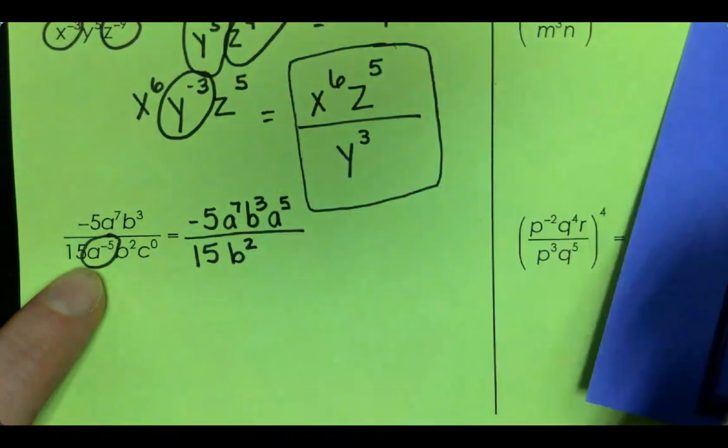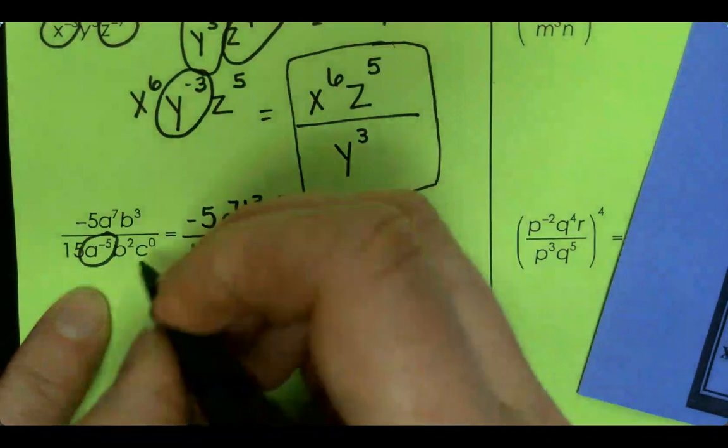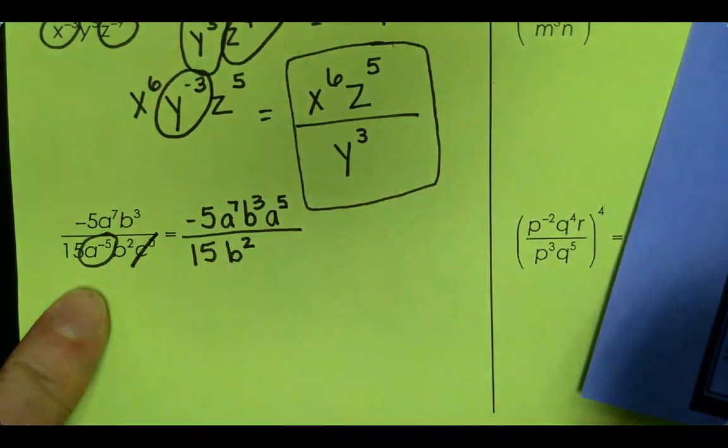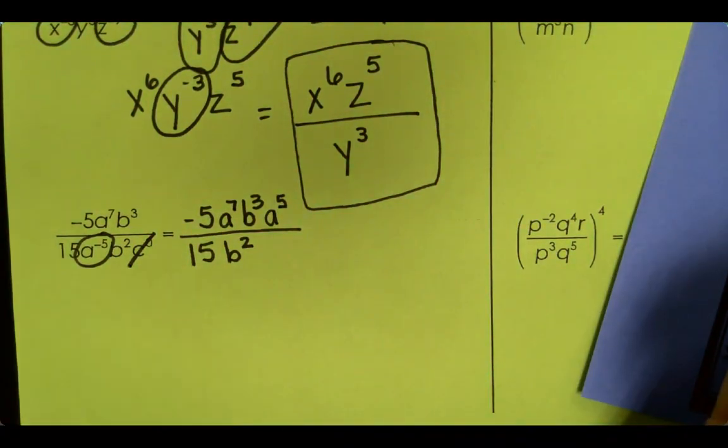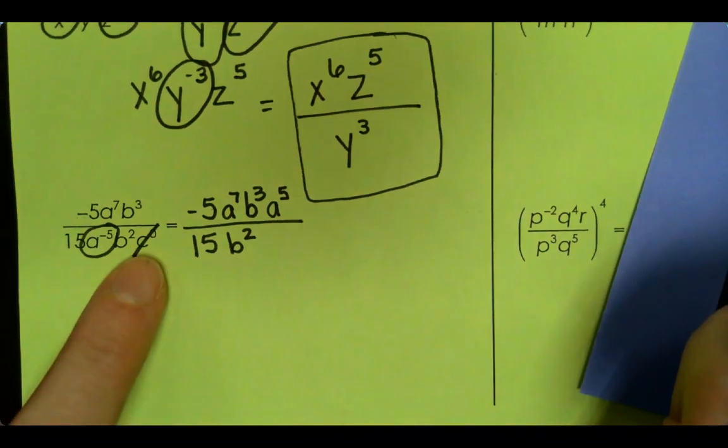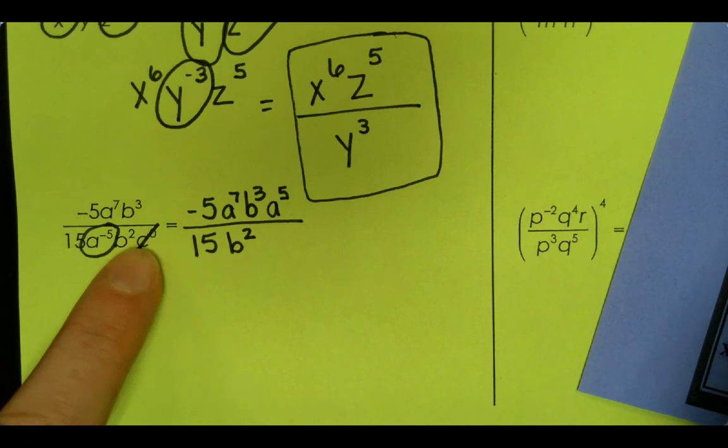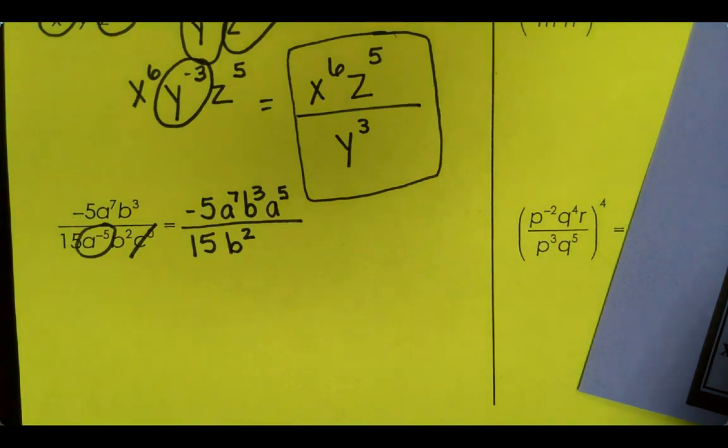And then B squared. And anything to the zero power, what does that equal? So we're going to mark it out because it's like multiplying times 1. Do we need times 1 written down? Does it change anything if I do B times 1? It doesn't. So we don't need that 1. So every time I have something to the power of zero, I'm just going to mark it out.